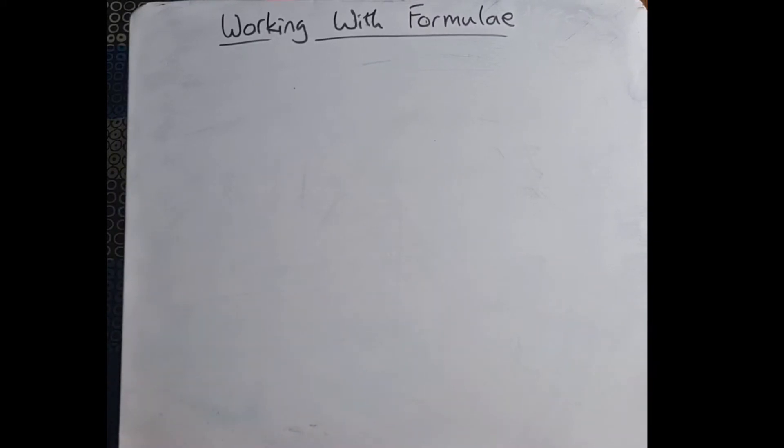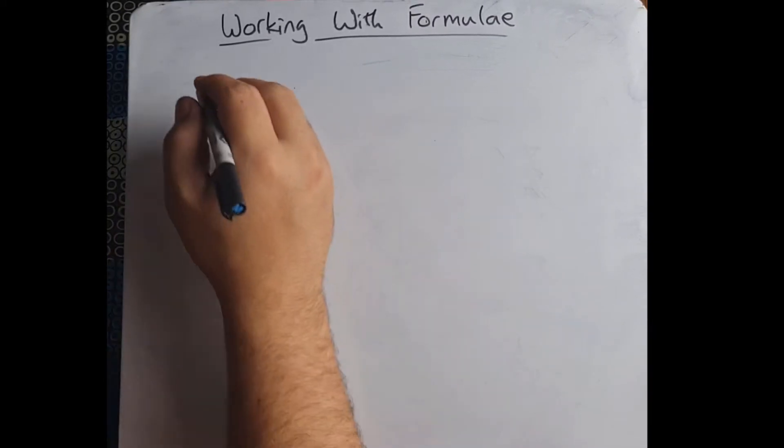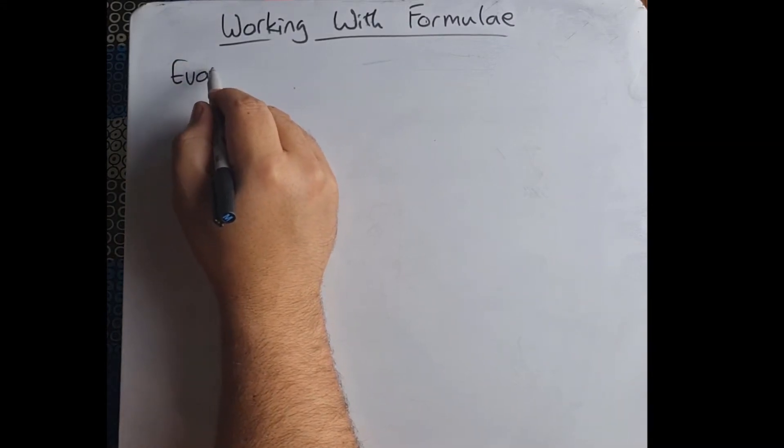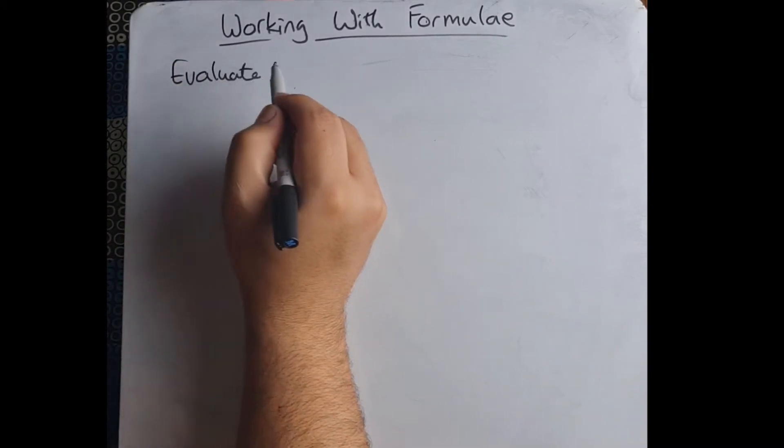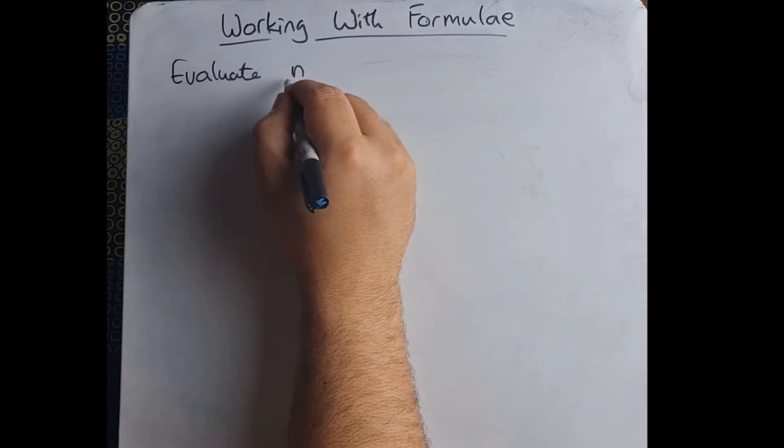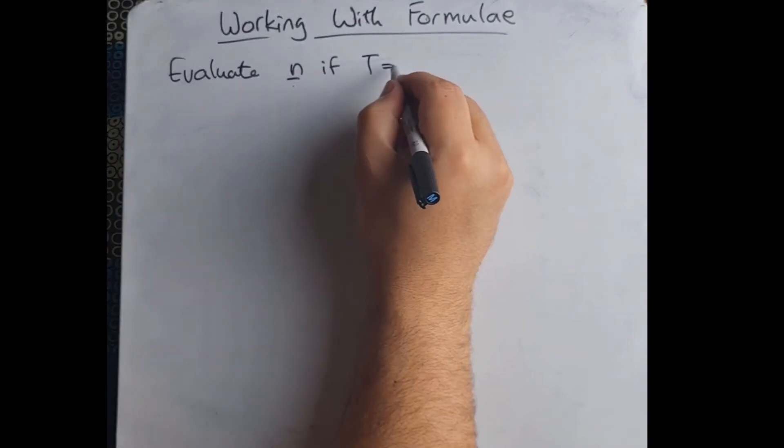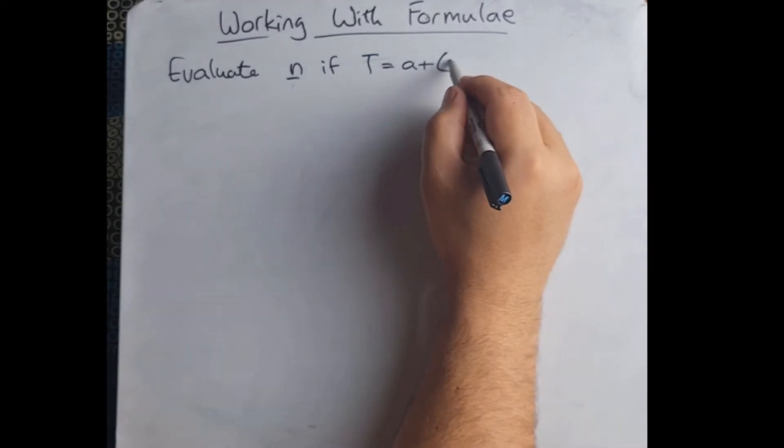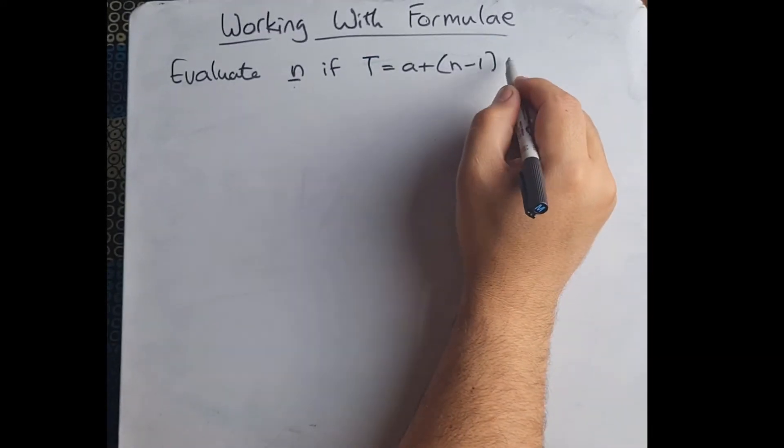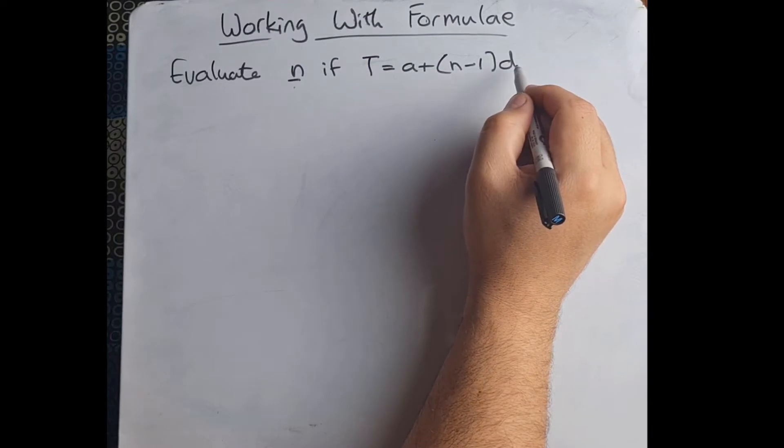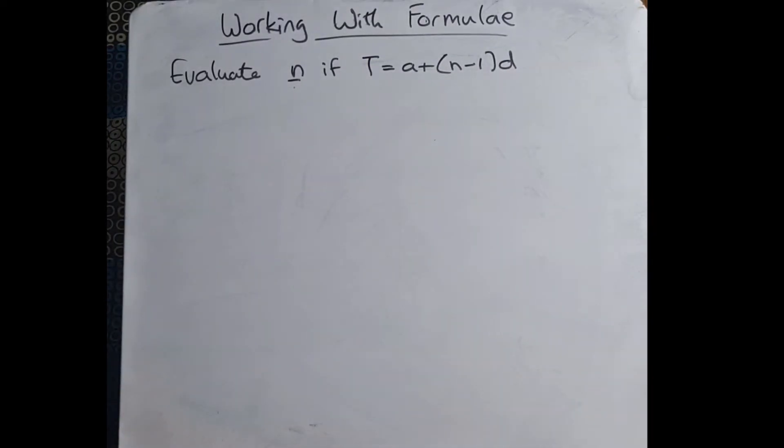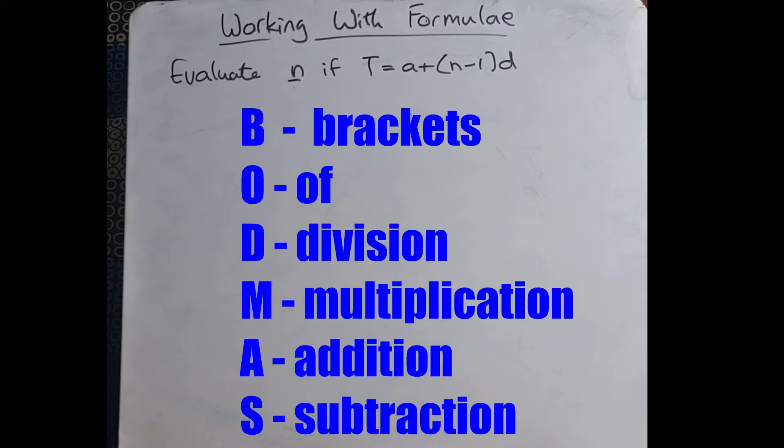They want us to evaluate n if, and here's the formula: T = a + (n-1)d. Now please remember when you deal with this you need to remember BODMAS, which is your brackets, of, division, multiplication, addition, and subtraction. You can use estimation where possible to check your calculator work, just to give you a rough idea of what the answer should be.